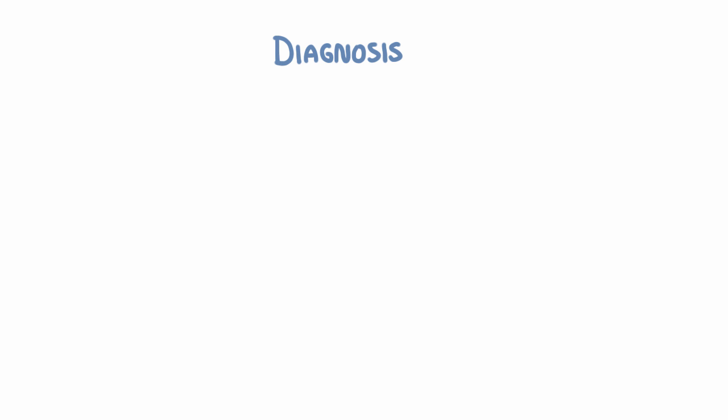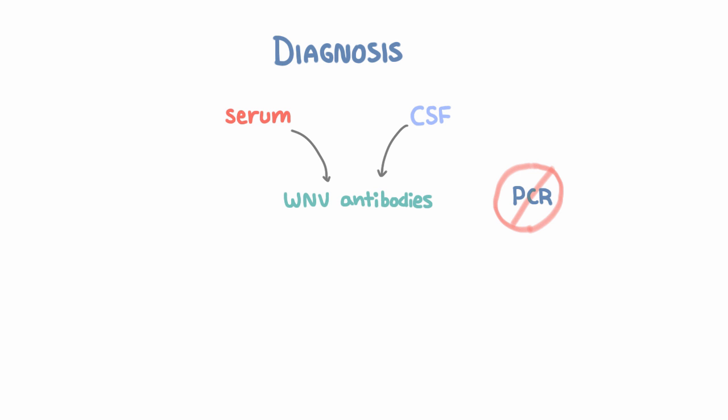Diagnosis of West Nile virus involves checking the serum and CSF for West Nile virus antibodies. For most viruses, we prefer to check PCR, but because West Nile has such low levels of viremia, PCR is not a sensitive test. Whereas almost all people presenting with neurologic signs and symptoms of West Nile virus have IgM in the CSF at the time of presentation.